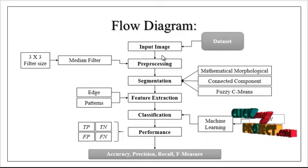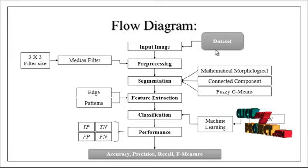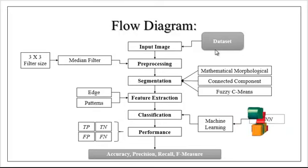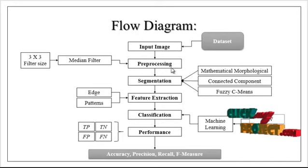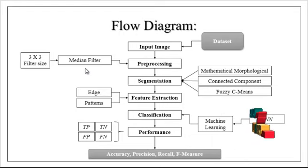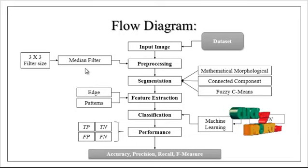First, the input image is taken from the dataset. The dataset consists of MRI images of both tumor and non-tumor images. After getting any one image from the dataset, we move to preprocessing. In preprocessing, the major stage is the median filter, which is applied to remove noises present in the tumor regions or any other background regions.